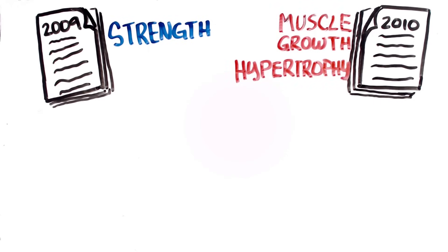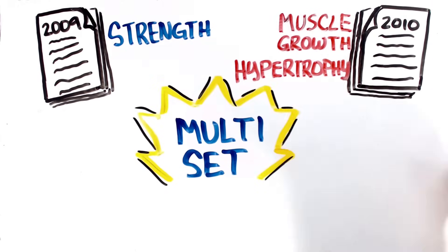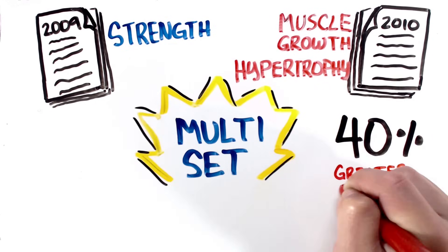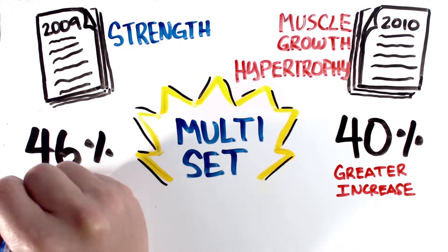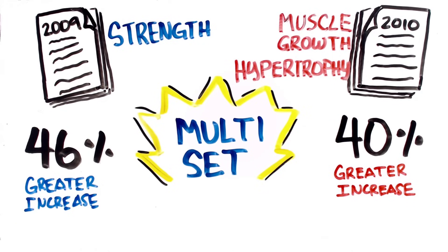One meta-analysis measured difference in strength gains, while the other measured difference in muscle gains, aka hypertrophy. In both researches, multiple set training came out on top. The study showed a significant 40% greater increase in hypertrophy for multiple sets versus single sets, and an even more significant 46% greater increase in strength gains. So no doubt, multiple set training is the way to go.